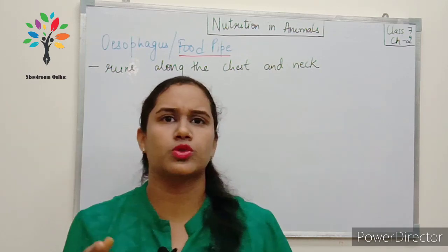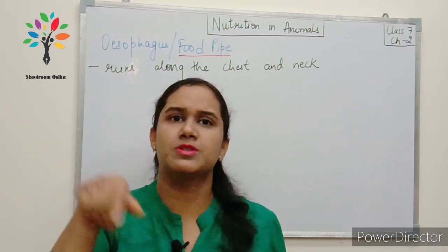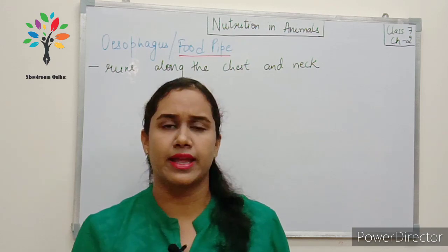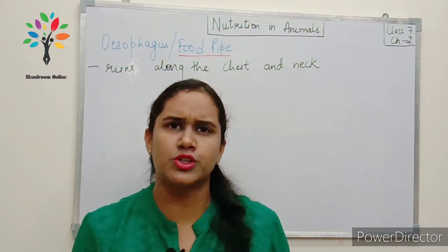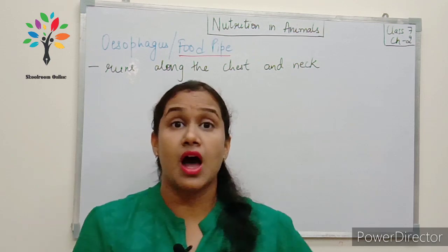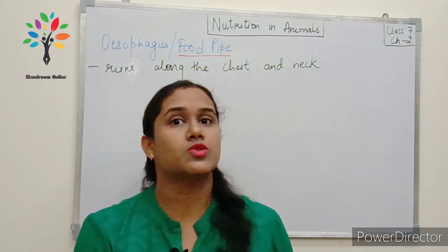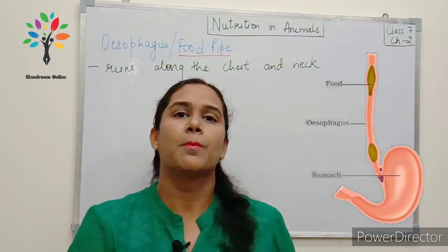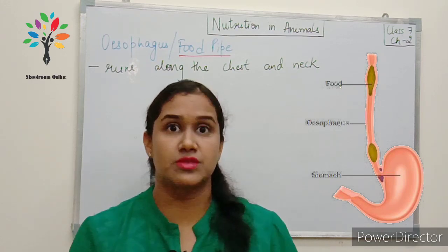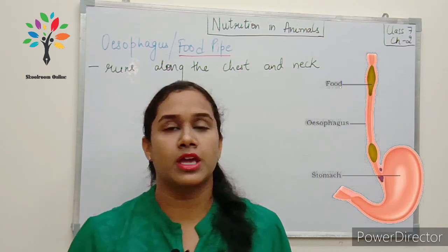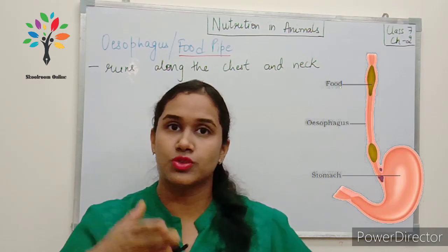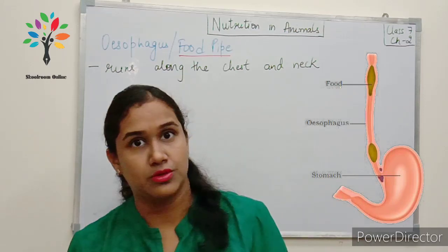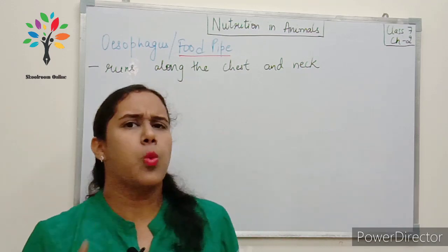The tongue is muscular and can move in all directions, so it helps in the movement of food. But the esophagus is a pipe running along our chest and neck. The walls of the esophagus help in the movement of food. In fact, in the entire alimentary canal, this movement of the walls occurs so that food can easily move from one organ to the other.